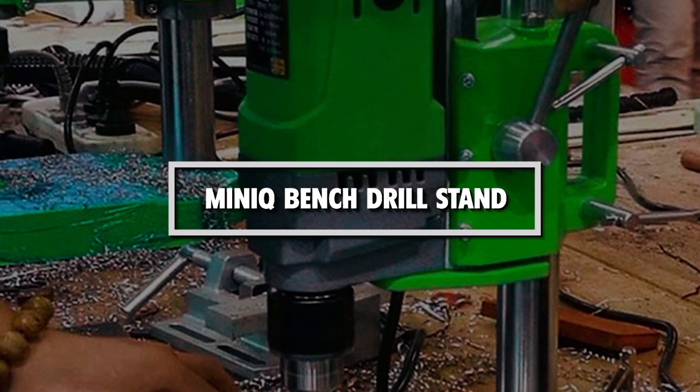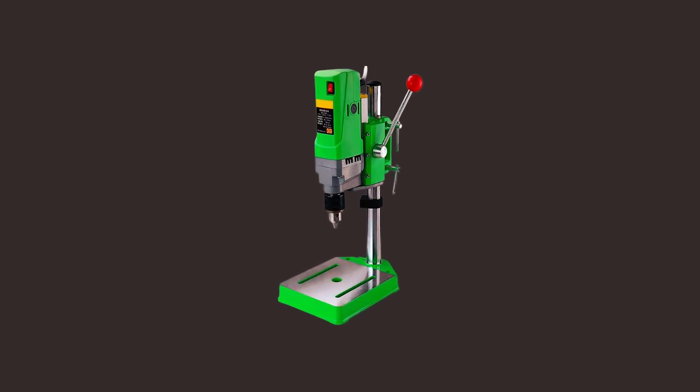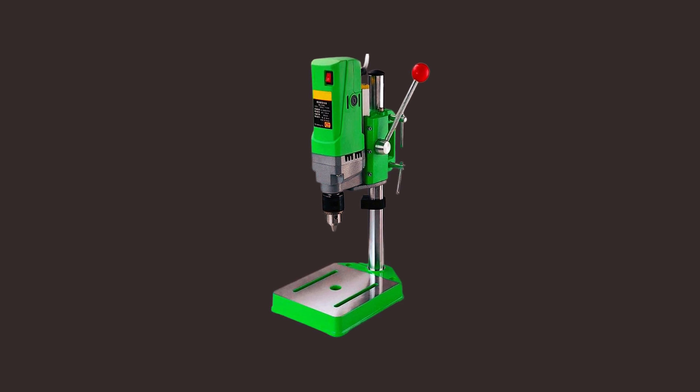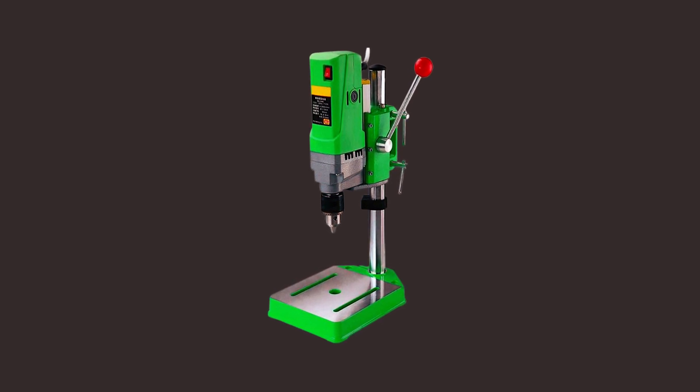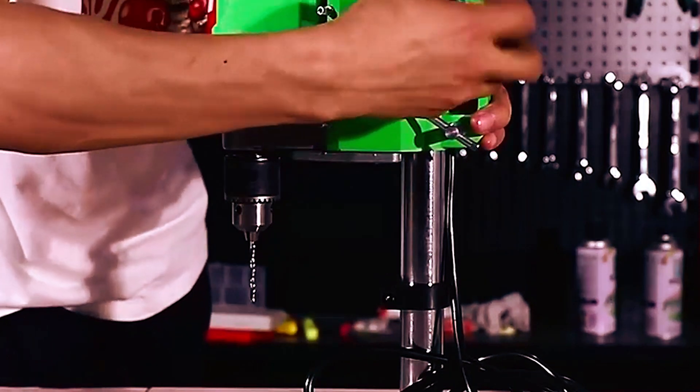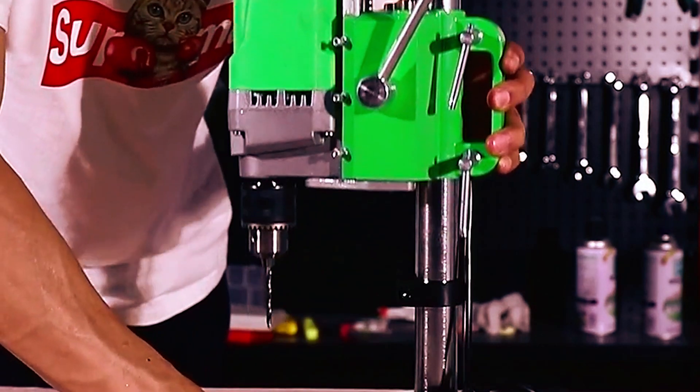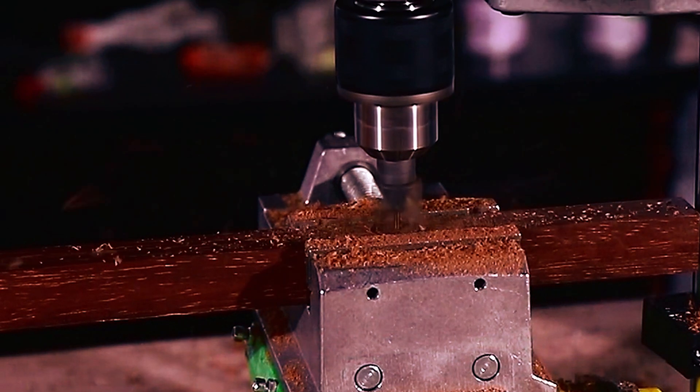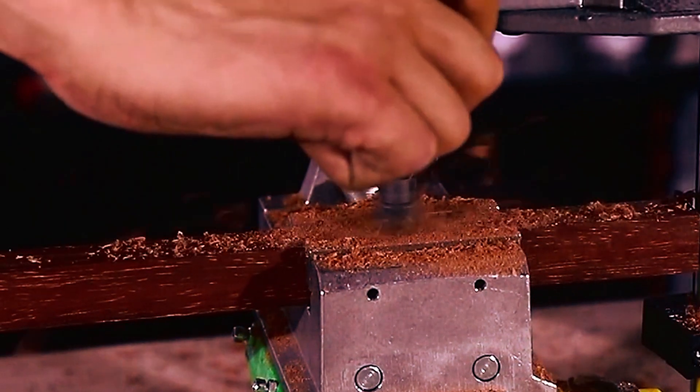Minic Bench Drill Stand. The Minic Bench Drill Stand is a versatile and compact mini drilling machine that can be used for a wide range of drilling and precision machining tasks. With a 710 watt power output and a 13 mm chuck, this drill press can handle drilling on materials such as wood boards, plastic, metal, circuit boards, and more.